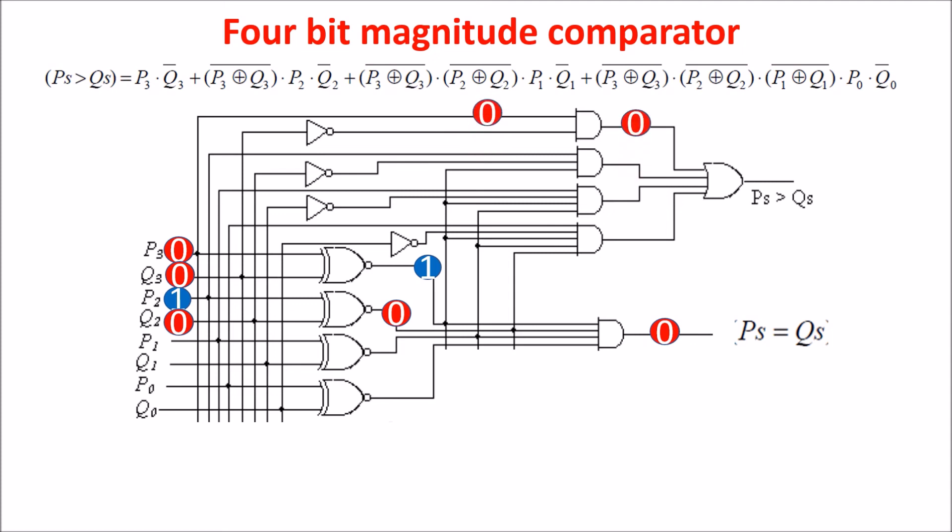But the second AND with the 3 inputs is at 1, generating the 1 on the output of the OR. The second AND is the product of P2, Q2 bar and XNOR of the most significant bit.